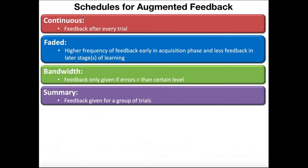What effect does frequency of augmented feedback have on performance and retention of the motor skill? High frequency of feedback — as seen in a continuous feedback schedule — leads to greater performance in the moment. However, it does not necessarily facilitate retention. We want to taper off feedback, and as we get to lower levels of feedback, this tends to facilitate increased retention of the motor skill. So we don't want to keep feedback continuous the whole time. As the person moves to the associative and autonomous stages, we want to decrease the frequency of augmented feedback because that's what facilitates long-term retention.